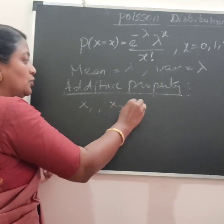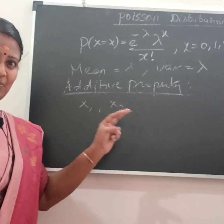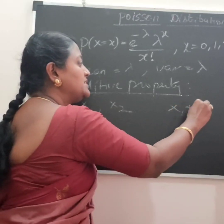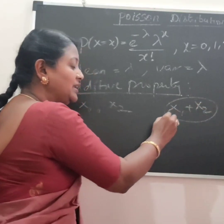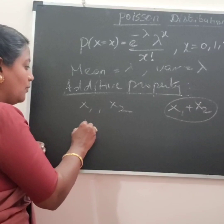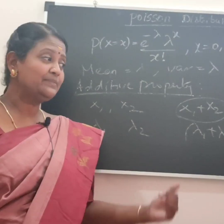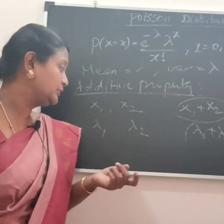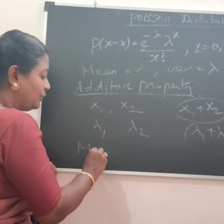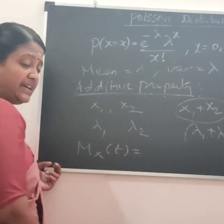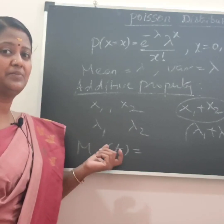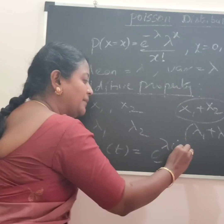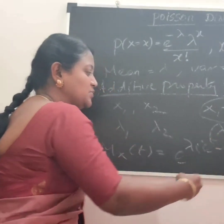So the additive property is very easy. If x1 and x2 are two Poisson variables, you can find the sum x1 plus x2, which is a new variable. x1 has parameter lambda1 and x2 has parameter lambda2, and the sum also follows a Poisson distribution. The moment generating function Mx(t) equals e to the power lambda times (e to the power t minus 1).